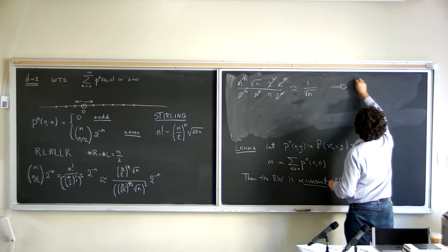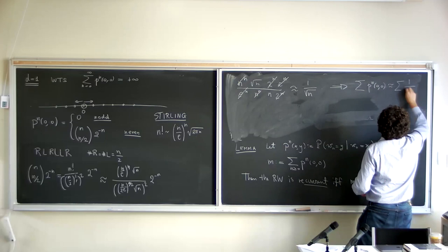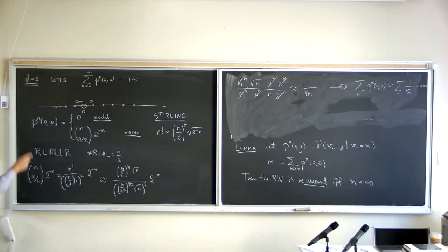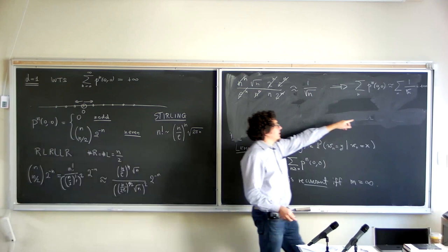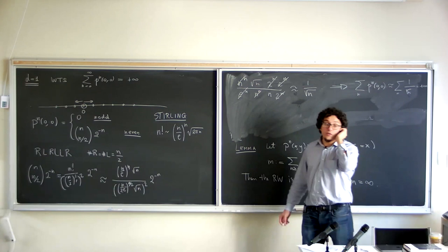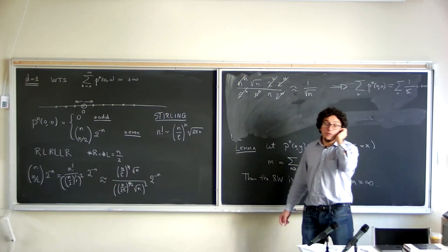The sum of P_n(0,0) diverges because each term grows like 1/√n. The returns to 0 in dimension 1 are polynomial — of order 1/√n — and this power is small enough that 1/(1/√n) summed diverges. So the walk in dimension 1 is recurrent.